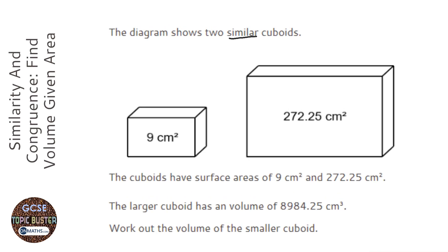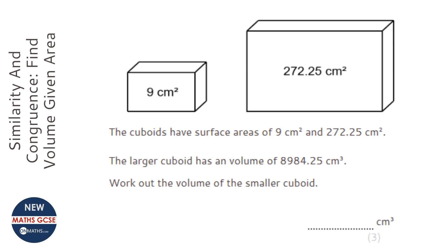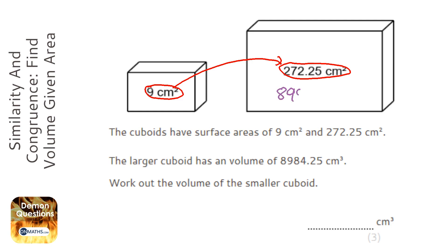Okay, so we're told we have similar cuboids, which means one's a direct enlargement of the other. We have two areas and we do have a larger volume, which is 8984.25 centimeter cubed, and we're asked for the smaller one.